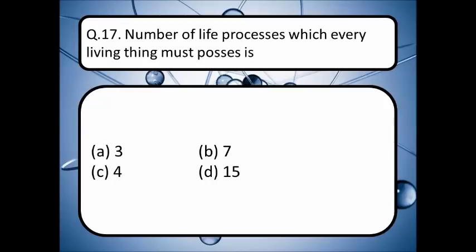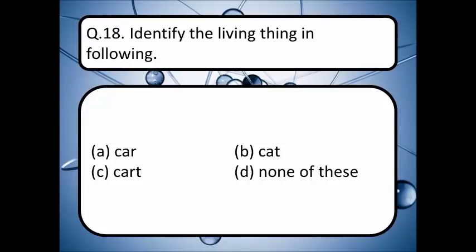The number of life processes which every living thing must have is — the correct answer is option B, seven. Next: identify the living thing in the following. Pick your correct answer, option A, B, C, or D. The correct answer is option B.